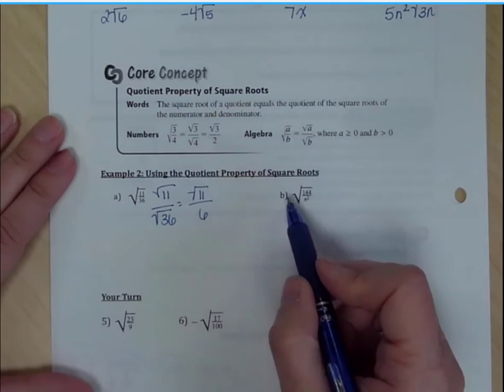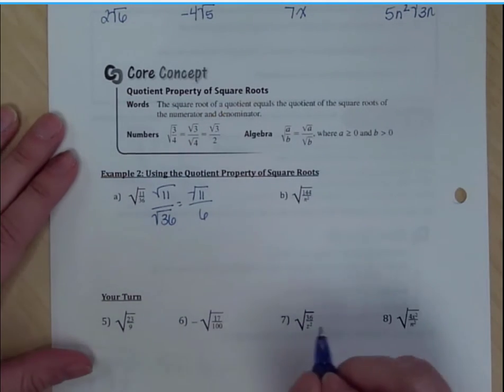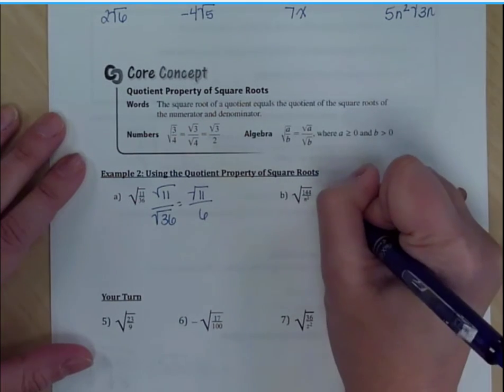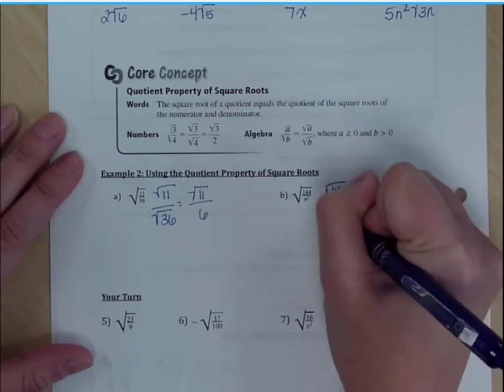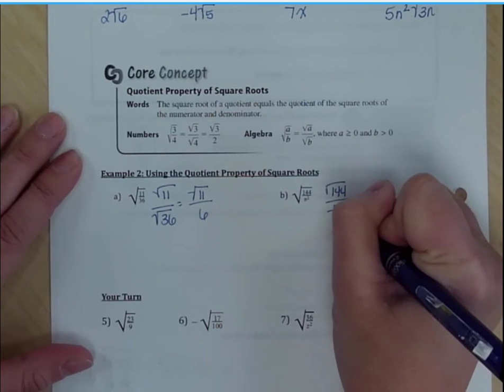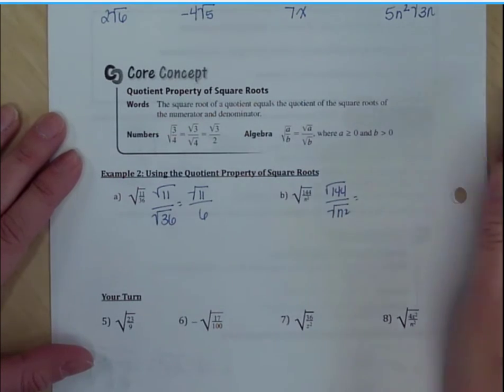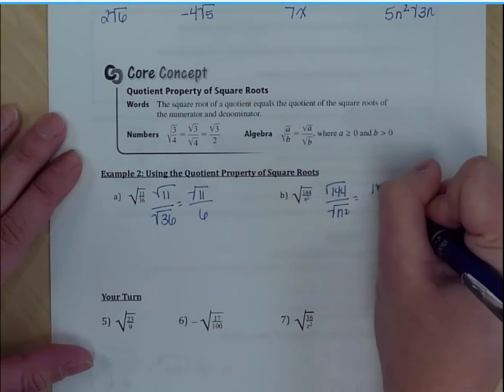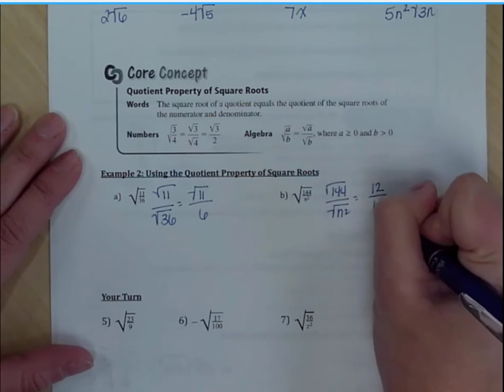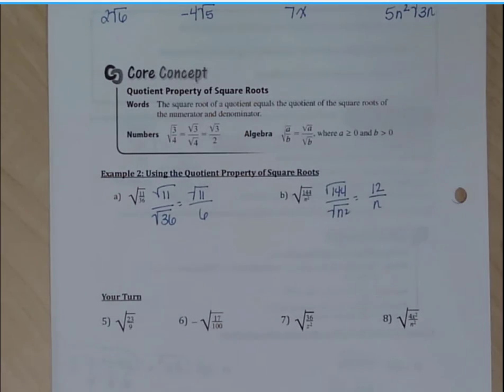Let's take a look at b. The square root of 144 over n squared. So I have the square root of 144 over the square root of n squared. And the square root of 144 is 12. The square root of n squared is n. So my final answer here is 12 over n.